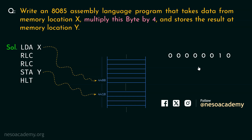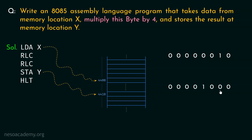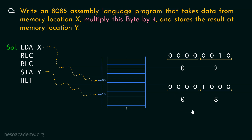Now notice: on this data we will perform RLC. Once the data is loaded into the accumulator, if we execute RLC once the bit 1 will shift one place left. But since we are executing RLC twice, the bit 1 will shift two places left. So the output data will be 00001000. In hexadecimal, the input data 00000010 is 02H, and the output data 00001000 is 08H.